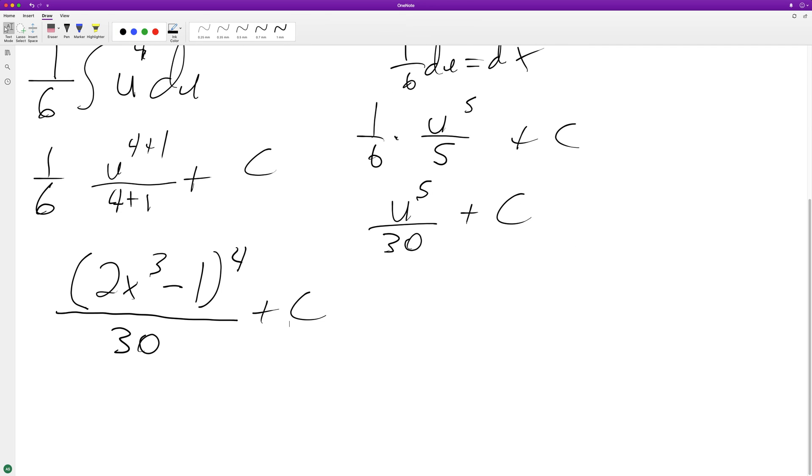So this is the full integral, so we can go ahead and test it and make sure by taking the derivative. So we have 4 times 6x squared. That's the derivative of the inside. Then we have 2x cubed, 4x squared.